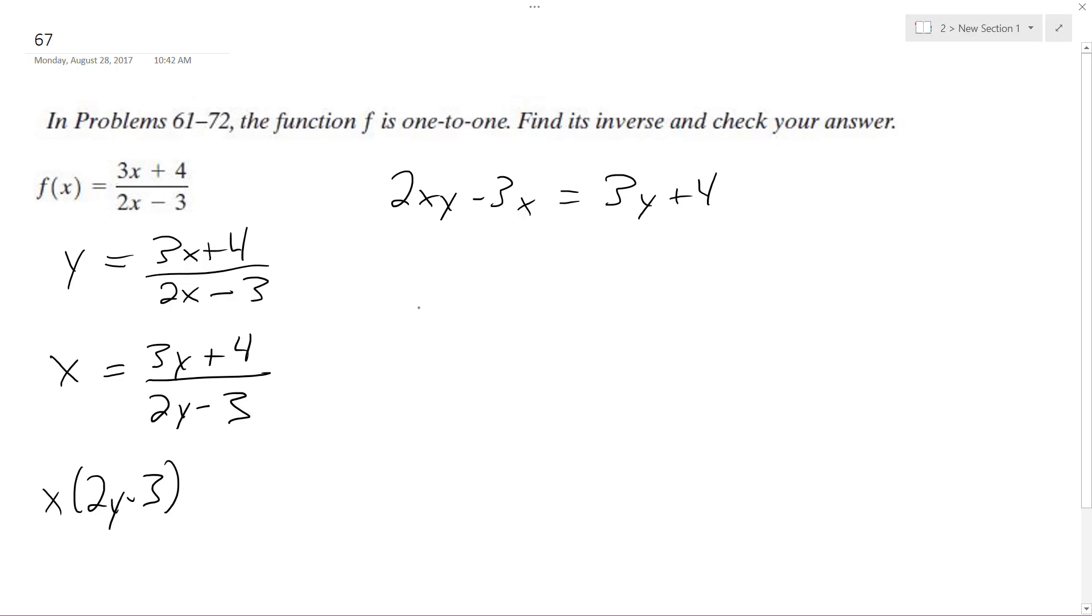I'm going to get all the components with y on the same side, so I'm going to subtract 3y and then add 3x to the other side. So I get y times 2x minus 3 equals 3x plus 4, which means y is going to be equal to 3x plus 4 over 2x minus 3.